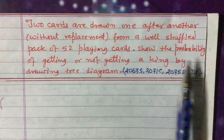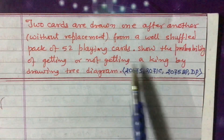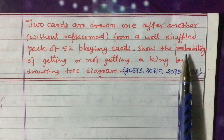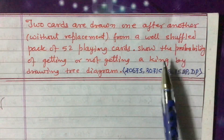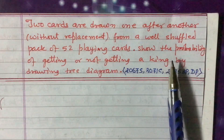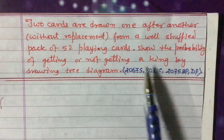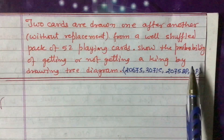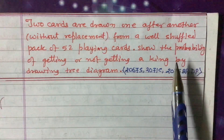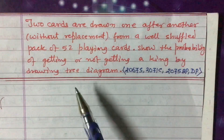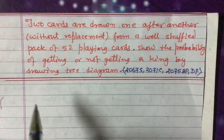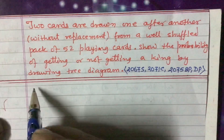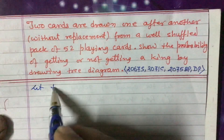We have to find the probability of getting or not getting a king by drawing a tree diagram — showing both getting a king and not getting a king in the tree diagram with all probabilities. Similar types of questions were asked in other provisions in 2075 as well, where instead of king it was a queen, an ace, or similar. If you know how to solve this one, you can solve the others in the same way.